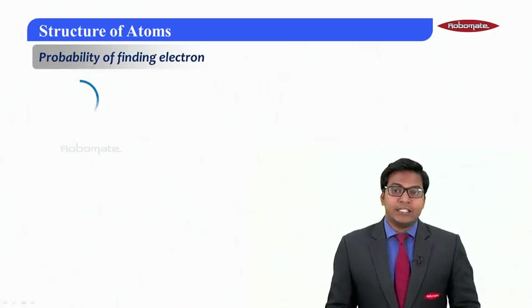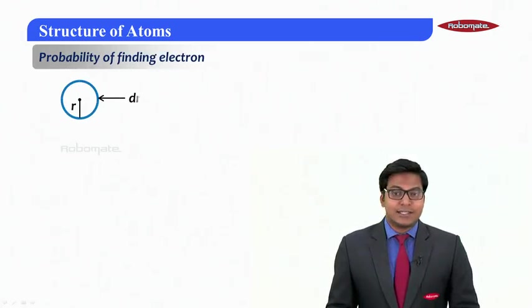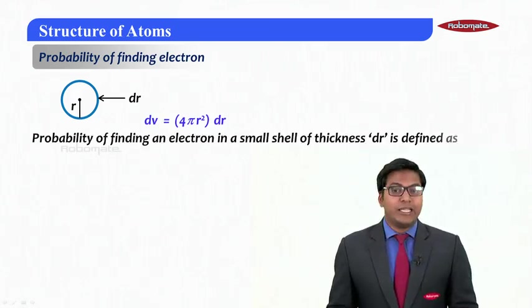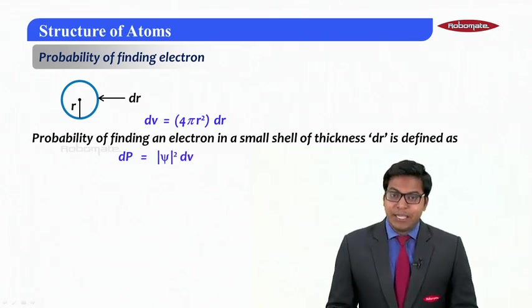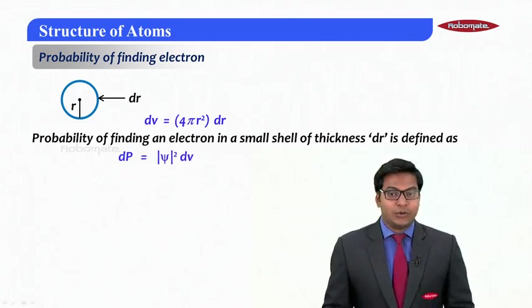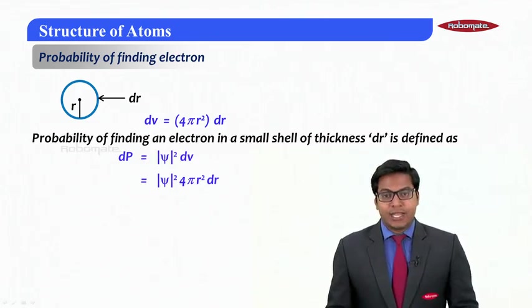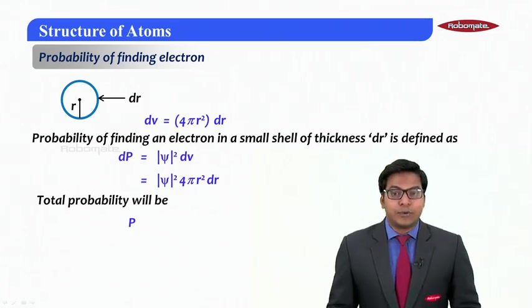For which we took a shell at a distance r with thickness dr and we can calculate the volume of it which is 4πr²·dr. The probability of finding electron in that small thickness dr can be defined as dP which is ψ²·dv where ψ² is the probability density function, which can be written as 4πr²ψ²·dr.